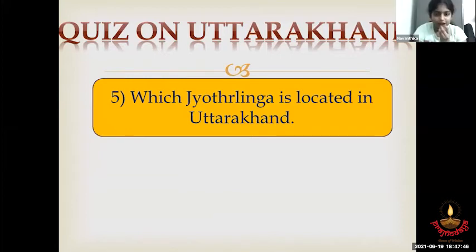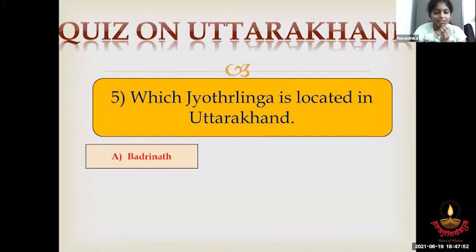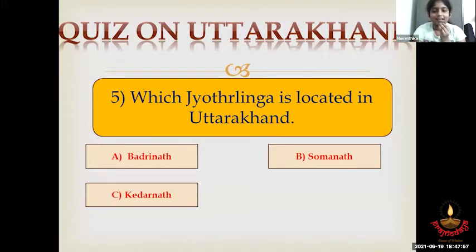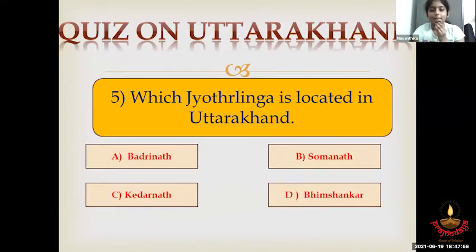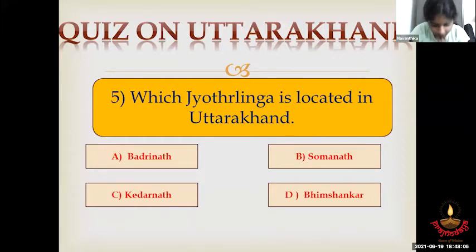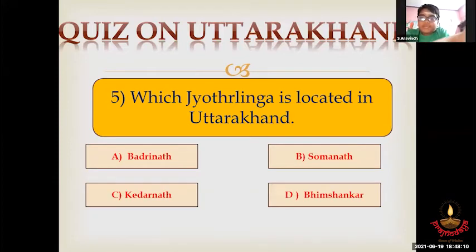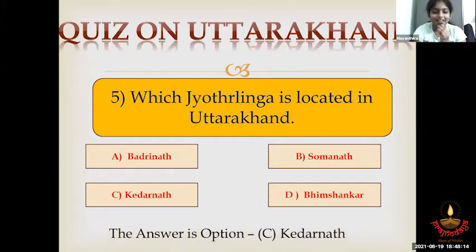Fifth question: Which Jyotirlinga is located in Uttarakhand? Option A, Badrinath. Option B, Somnath. Option C, Kedarnath. Option D, Bhimashankar. This question goes to Aravind. I think Option C, Kedarnath. Yes, it is the correct answer — Option C, Kedarnath.